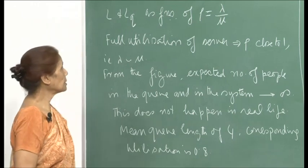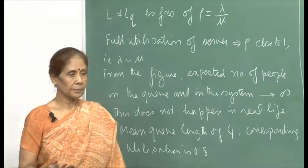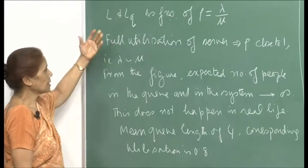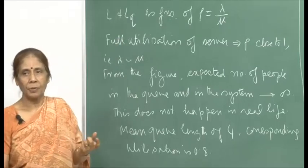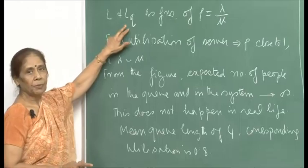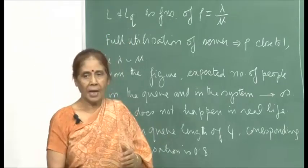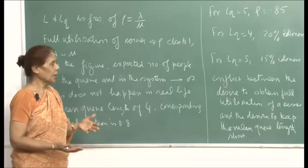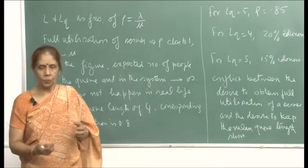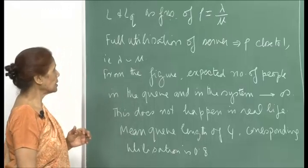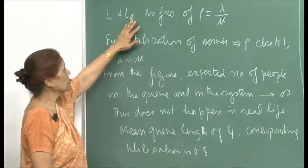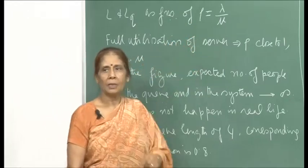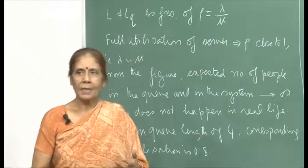I will continue my discussion about the queuing system and the features important in determining various aspects of a queuing system. L denoted our average number of people in the system, Lq was the average number of people in the queue. We also computed the average waiting time a person will spend in the system, which includes waiting in the queue plus service time. Let me continue the discussion about L and Lq as functions of ρ, which is λ/μ — where λ is the mean arrival rate and μ is the mean service rate. λ/μ denotes the server utilization of the queuing system.